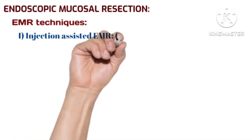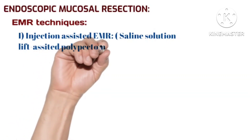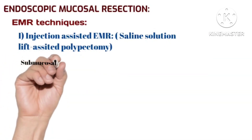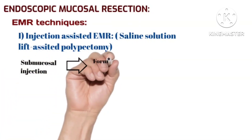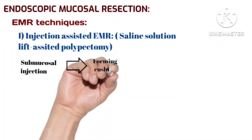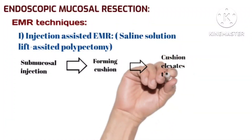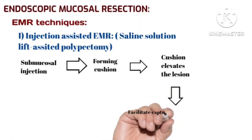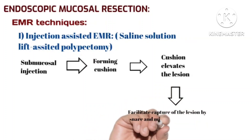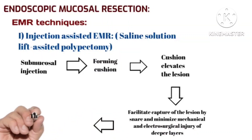The first EMR technique is injection-assisted endoscopic mucosal resection, also called saline-solution lift-assisted polypectomy. A submucosal injection of saline is performed to form a submucosal cushion, which elevates the suspected lesion, facilitates capture by the snare, and minimizes mechanical and electrosurgical injury to deeper layers. The lesion is then removed en bloc, as shown in the image.